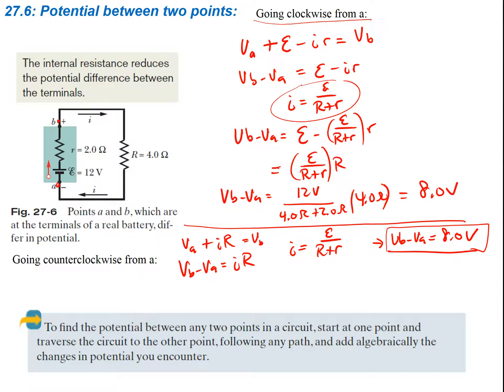To find the potential between any two points in a circuit, start at one point and then traverse the circuit to the other point following any path, and then add algebraically the changes in potential you encounter. We could either go one way or the other — as long as we start and end at the same points, we'll get the same voltage.